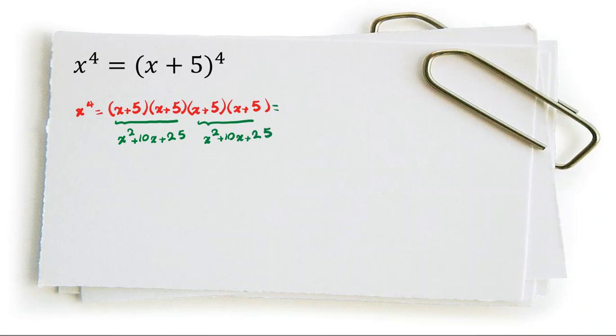Now, if we multiply all of them, we get x to the 4 plus 20x cubed. For x squared, we have 25 plus 100 plus 25, which is 150x squared. Then 250 plus 250 equals 500x. The last part is 5 to the 4, which is 625.